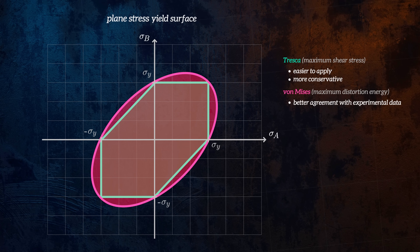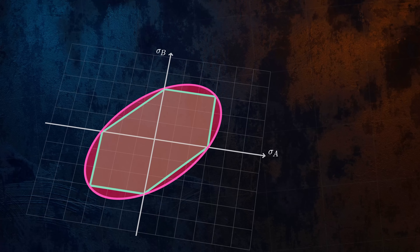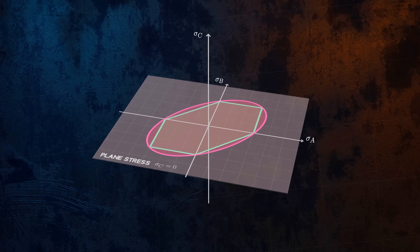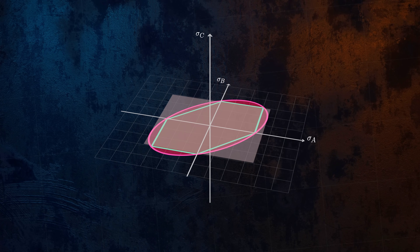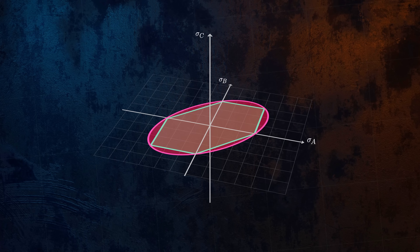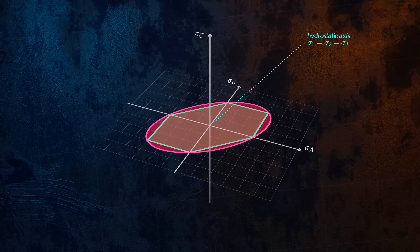So far we have looked at a plane stress case with sigma-c equal to zero, but for a general three-dimensional stress state sigma-c will be non-zero. Since the Tresca and von Mises yield surfaces aren't affected by hydrostatic stresses, to obtain the yield surfaces in three dimensions we simply extend the plane stress yield surfaces along the hydrostatic axis.